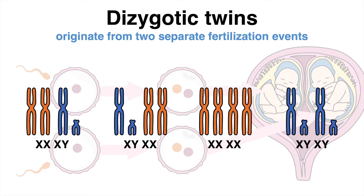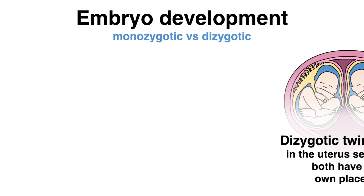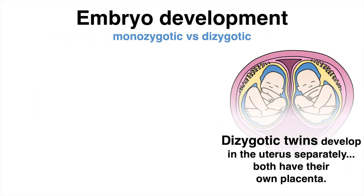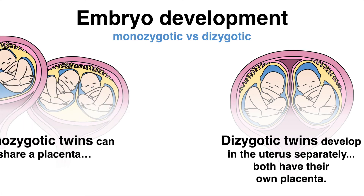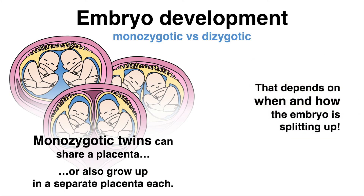Another difference between mono- and dizygotic twins lies within embryo development. Dizygotic twins develop in the uterus separately, and both embryos always have their own placenta. Monozygotic twins, on the other hand, can either share a placenta or grow in a separate placenta, depending on when and how the embryo splits. A lot of scenarios with either a shared placenta or two separate placentas are possible. For more details, check out the first link in the video description.